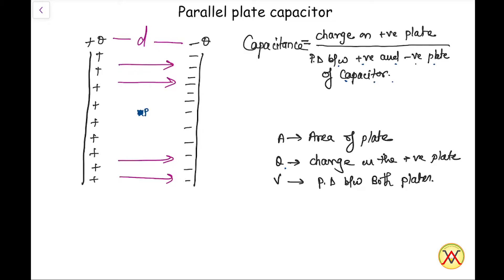The magnitude of charge is Q. V is the potential difference between both plates. We will learn ahead how to calculate that. For calculating the capacitance, the formula, as we already know, is: capacitance equals charge on the positive plate divided by potential difference between the positive plate and the negative plate of the capacitor.